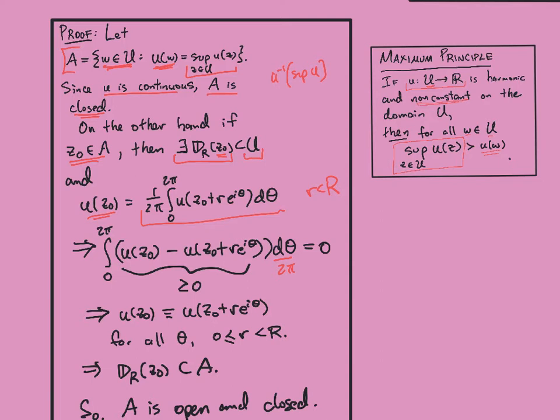And now I'll put this 2π back in here. But the point is if I subtract the two sides from each other, I'll get that this integral is 0. So here I'm integrating the constant thing from 0 to 2π and dividing by 2π. So it doesn't change anything. But now the inside is all non-negative stuff because we're assuming that z naught is in A. So u of z naught is equal to the supremum of all the values. So u of z naught is greater than or equal to all of these other values. And so I'm integrating a continuous function that's greater than or equal to zero and I'm getting zero.